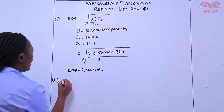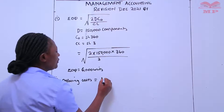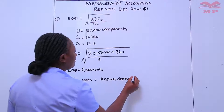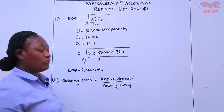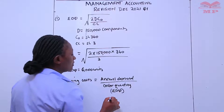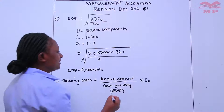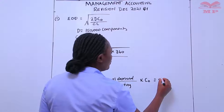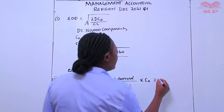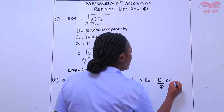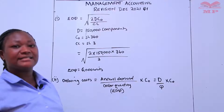How do we calculate ordering costs? Ordering cost equals annual demand divided by order quantity. According to our question, the order quantity here is the EOQ, multiplied by the ordering cost per order, which is denoted by CO. Mathematically, this can be written as D over Q multiplied by CO, where D is the annual demand, Q is the order quantity, and CO is the ordering cost per order.